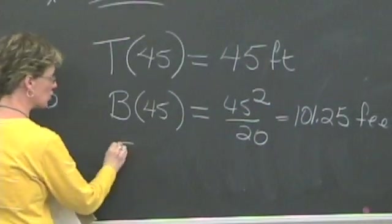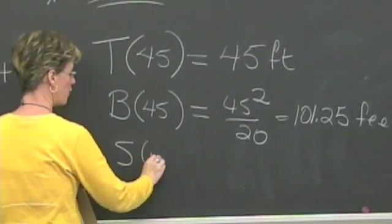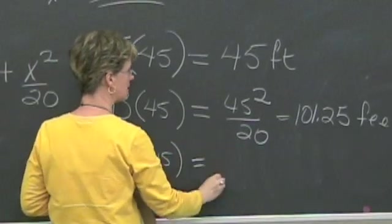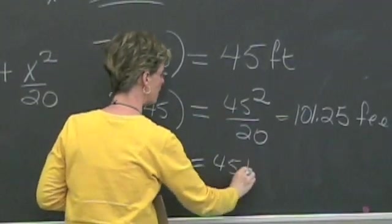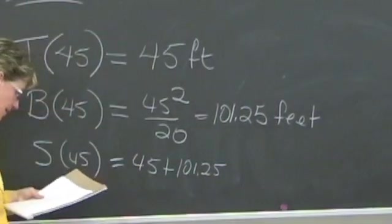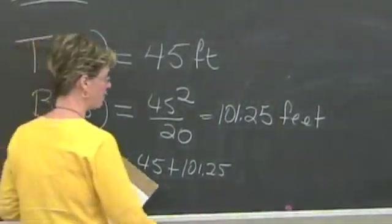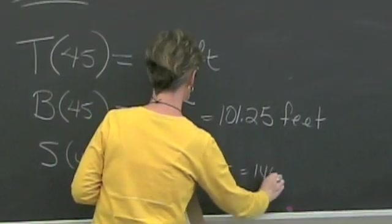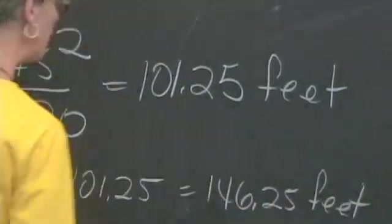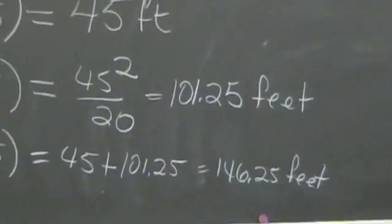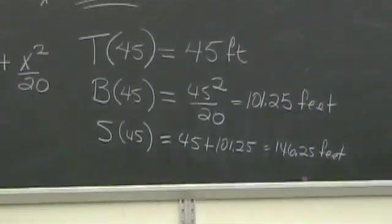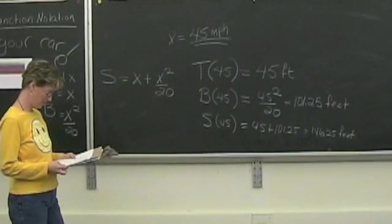Now the stopping distance of 45 miles per hour will be this plus this. So it's going to be 45 plus 101.25. And that is 146.25 feet. 146.25 feet. So if you're going 45 miles per hour, it's going to take you half a football field to stop. Half a football field to stop.